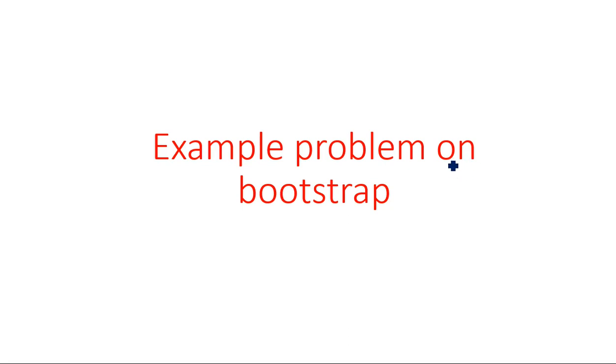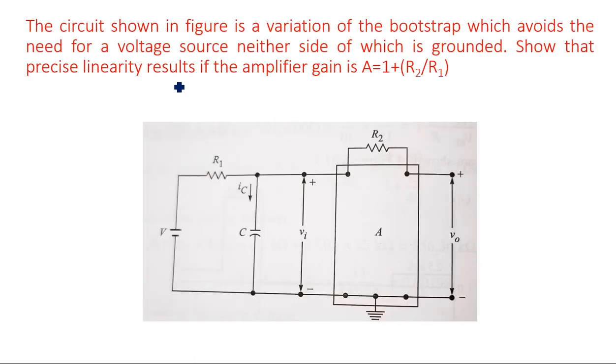Hi everyone, in this video I'm going to explain a calculation example problem on the bootstrap circuit. The question states: the circuit shown in the figure is a bootstrap circuit with standard resistance and capacitance. It is a variation of the bootstrap which avoids the need for a voltage source, neither side of which is grounded. Show that precise linearity results if the amplifier gain A equals 1 plus R2 by R1.